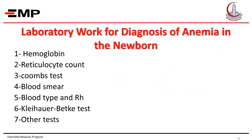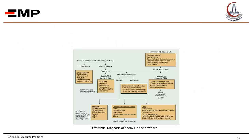Laboratory workup for diagnosis of anemia in the newborn includes hemoglobin level, reticulocyte count, Coombs test, blood smear, blood type and RH, Kleihauer-Betke test, and other tests. This figure shows the differential diagnosis algorithm of anemia in the newborn.